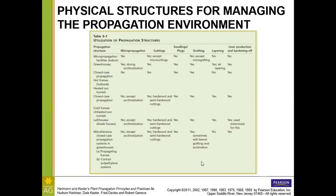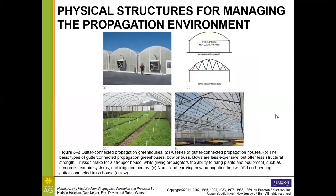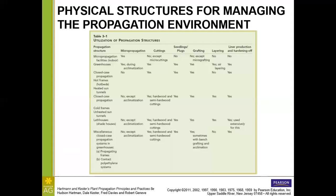Grafting — these plants can be propagated in any of these environments. For layering, air layering is going to be done in greenhouses; it can be done with the closed-case propagation and with the lath houses or shade houses. Any of these can be used for liner production and for the acclimatization that's needed after the liners are rooted, but especially the lath houses or shade houses — those are going to be used most extensively.